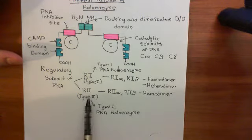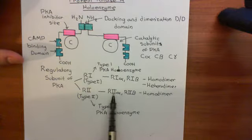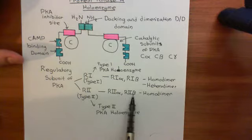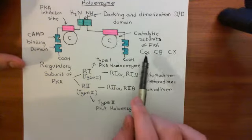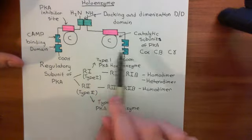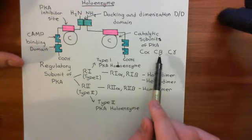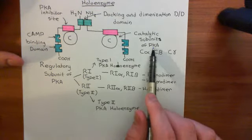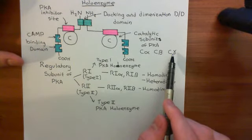Alternatively, you can use type 2 regulatory subunits to make your regulatory subunit dimer. In this case, you have to make homodimers — either a homodimer of the type 2 regulatory subunit alpha or a homodimer of the type 2 regulatory subunit beta. Then you attach on catalytic subunits, and there are three different catalytic subunits you can use: the catalytic subunit of protein kinase A alpha, beta, and gamma.